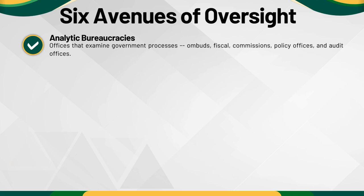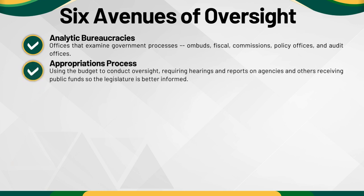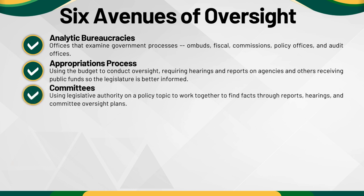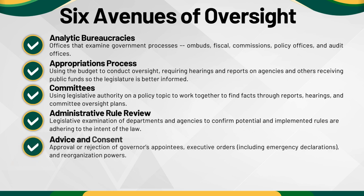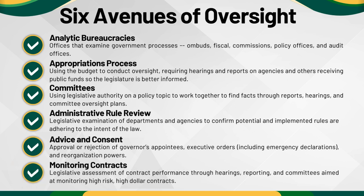The six avenues include: analytic bureaucracies — offices where examination of government processes happens in states, including ombuds, fiscal, commissions, policy offices, and audit offices. The appropriations process is where the budget is used to conduct oversight, requiring hearings and reports on agencies receiving public funds. Committees are where elected officials use their authority on a policy topic to work together and find facts through reports, hearings, and committee oversight plans. Administrative rule review is when departments and agencies are examined by the legislature to confirm rules are adhering to the intent of the law. Advising and consent oversight applies to the governor's appointees, executive orders, and reorganization powers. Monitoring contracts is how the legislature can access contract performance through hearings, reporting, and committees focused on high-risk, high-dollar contracts.